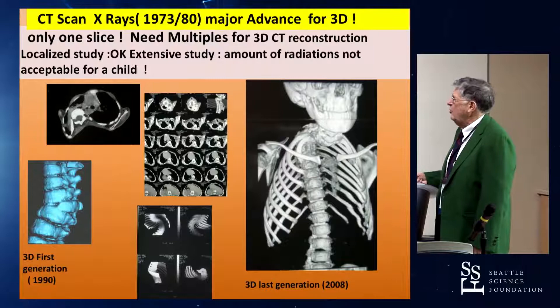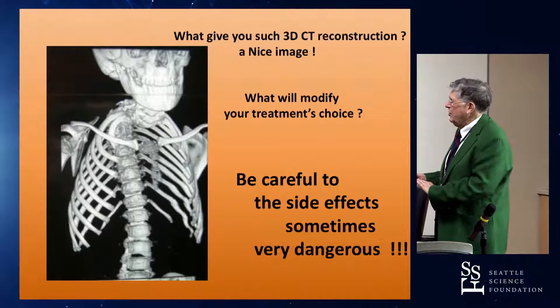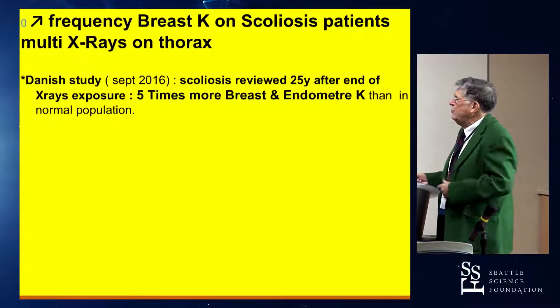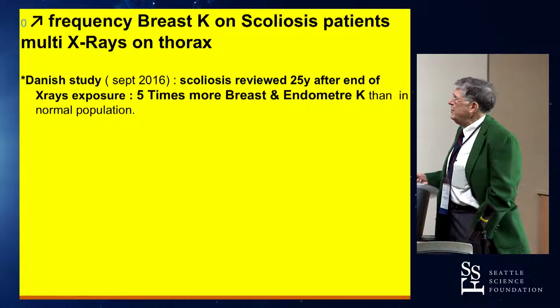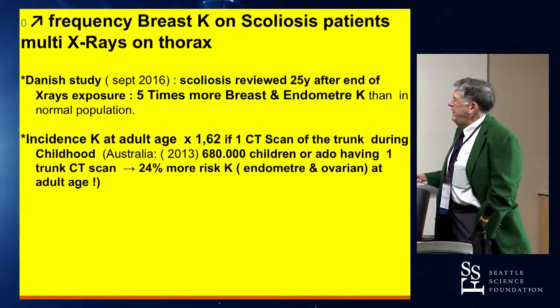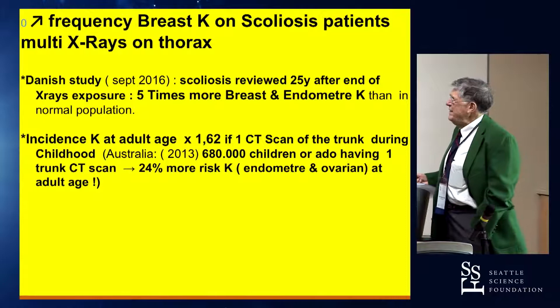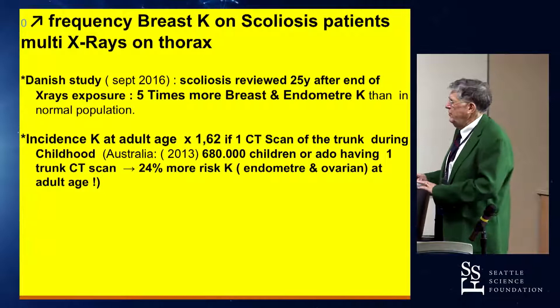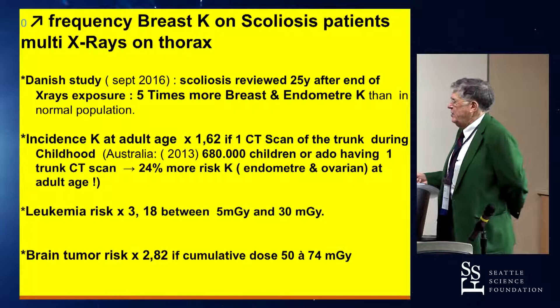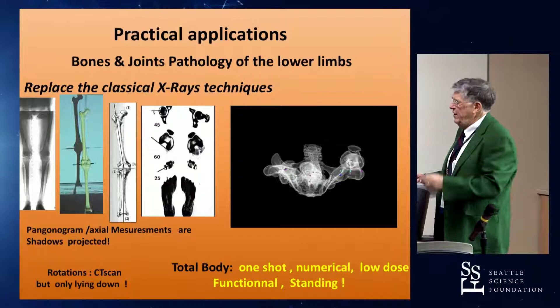All this will really modify your treatment choice. The side effects are very important and very dangerous. You know the Danish study that was done recently — five times more breast cancer. And the study from Australia: only one CT scan of the body, especially the trunk of a child, gives a 25% more risk at adult age — leukemia rates, brain tumor risk. So try to avoid CT scan reconstruction for the whole body.